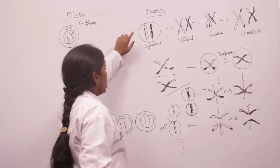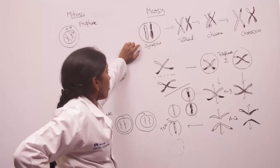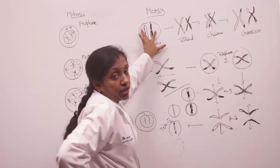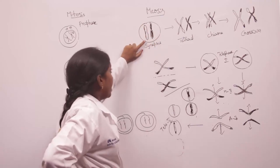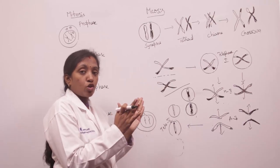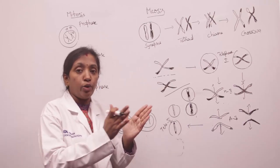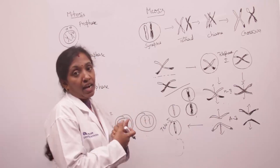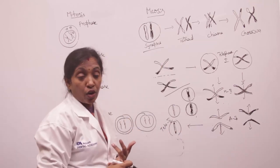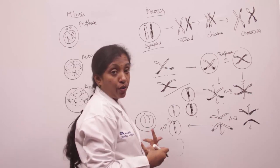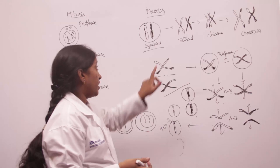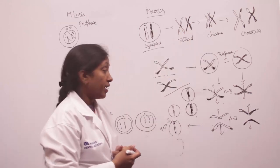In meiosis, one chromosome from maternal origin and one from paternal origin — homologous chromosomes — come together. One from maternal origin and one from paternal origin come point to point, and this process is called synapsis. The chromosomes divide into two sister chromatids and they are united at the synapse.